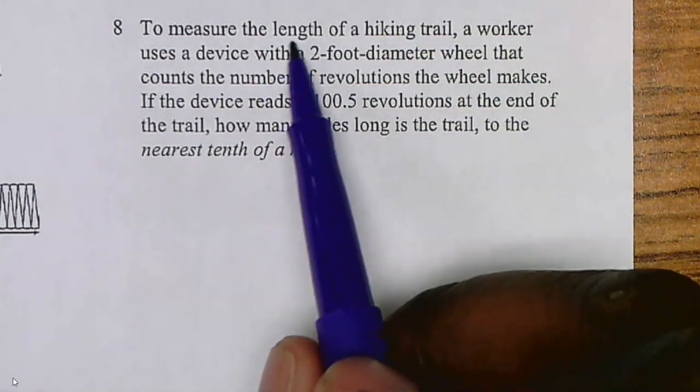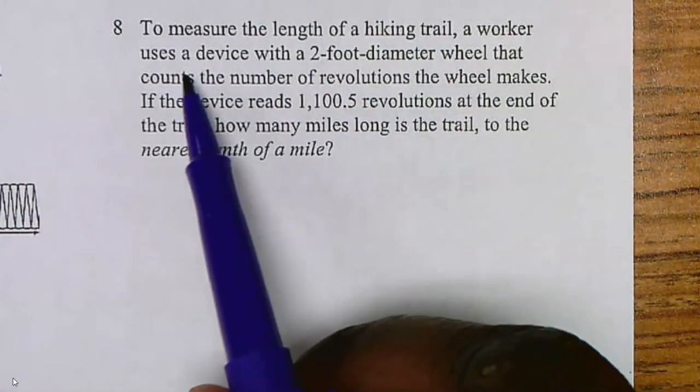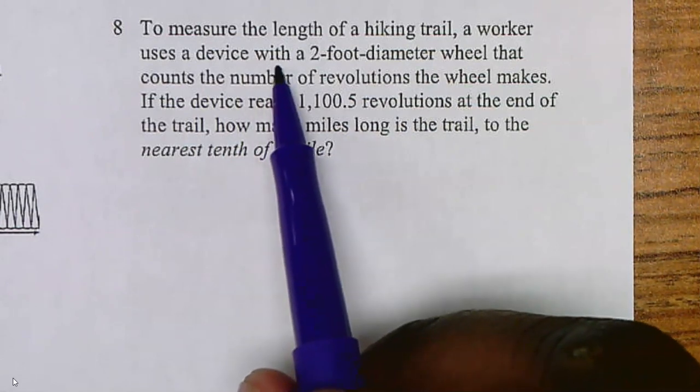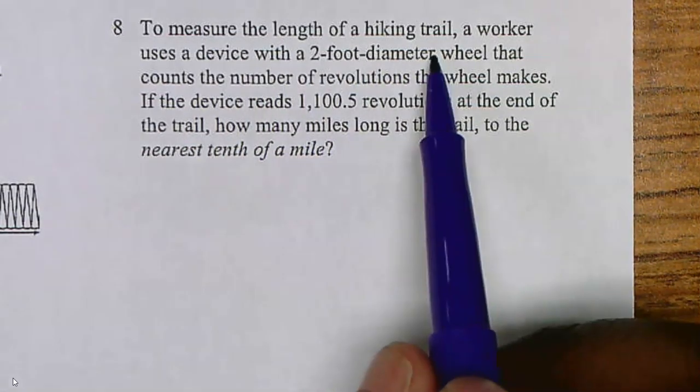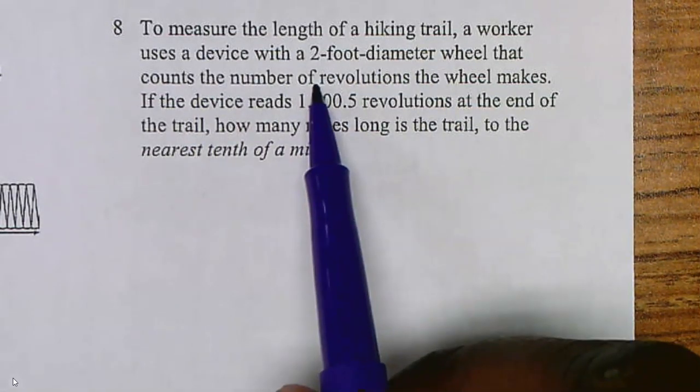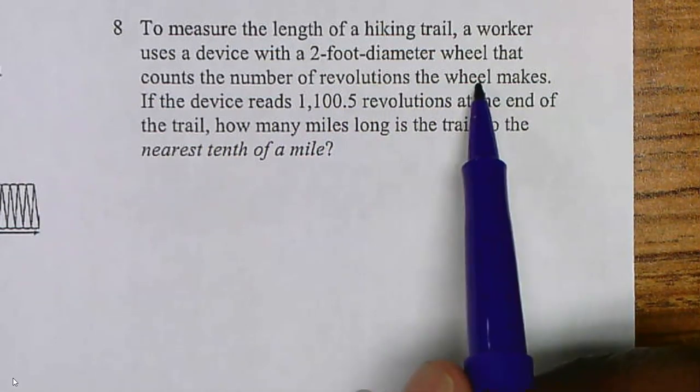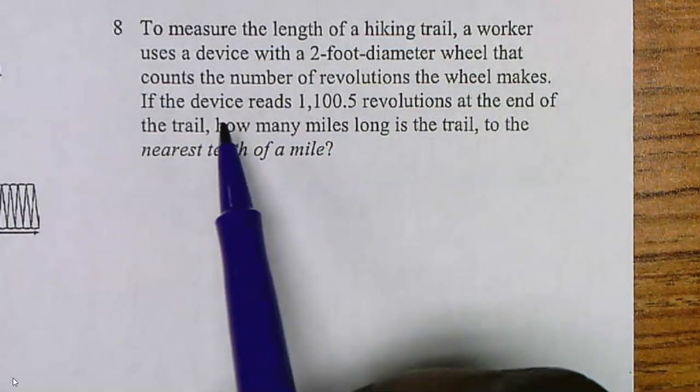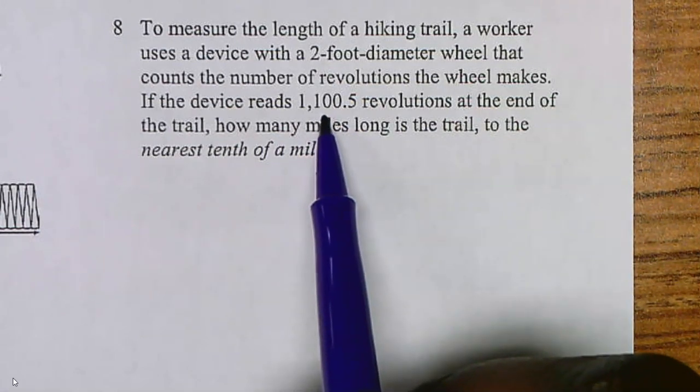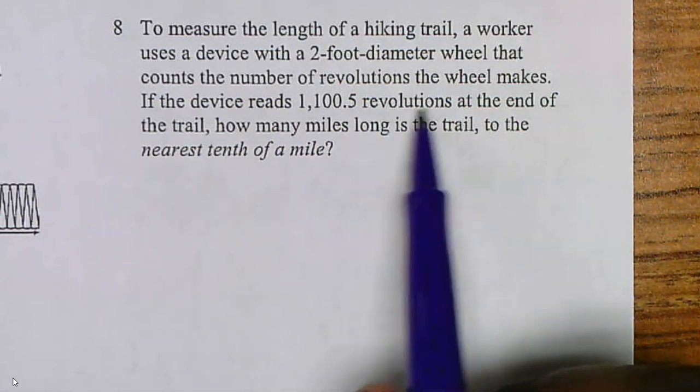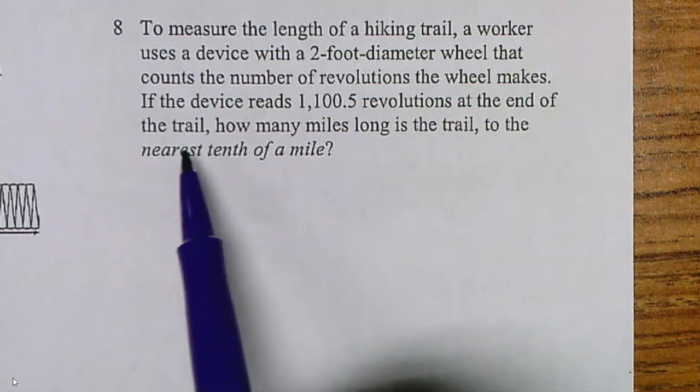And this problem asks, to measure the length of a hiking trail, a worker uses a device with a two-foot diameter wheel that counts the number of revolutions the wheel makes, or rotations the wheel makes. If the device reads 1,100.5 revolutions at the end of the trail, how many miles long is the trail to the nearest tenth?